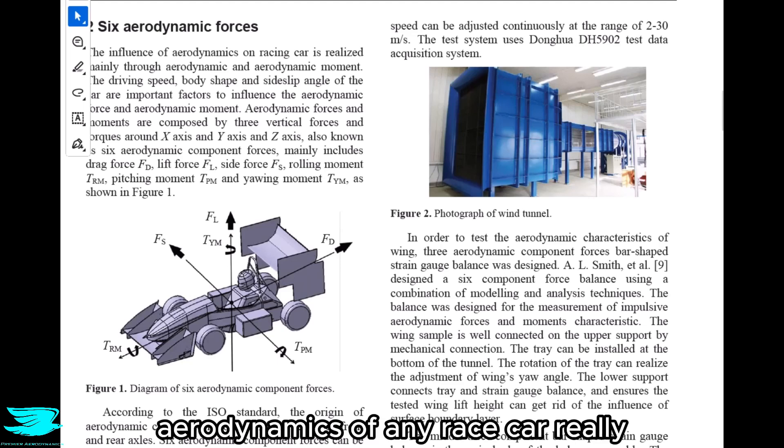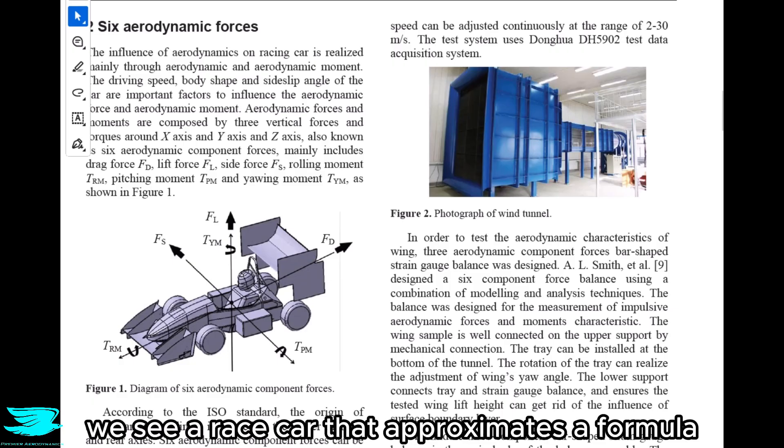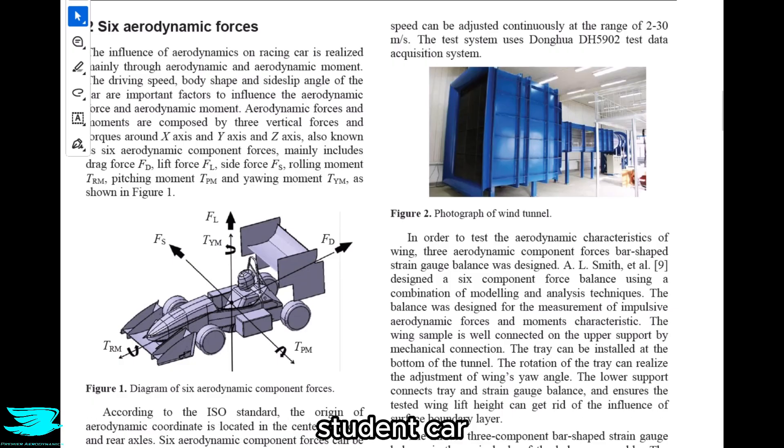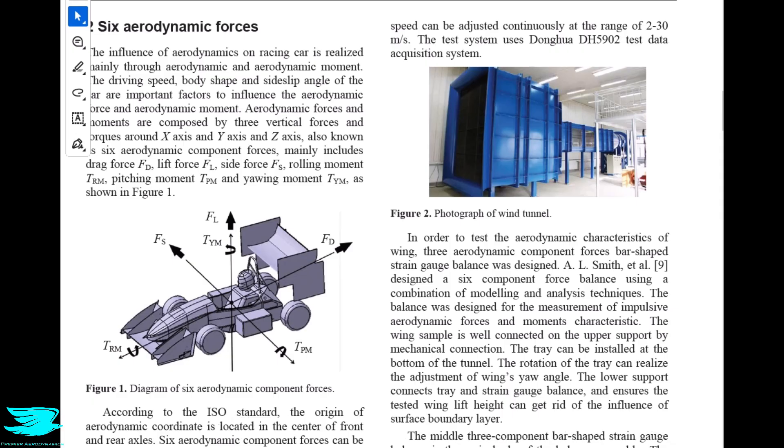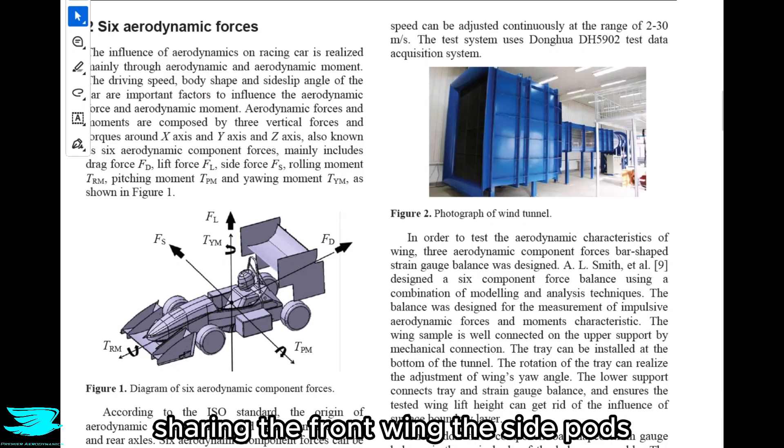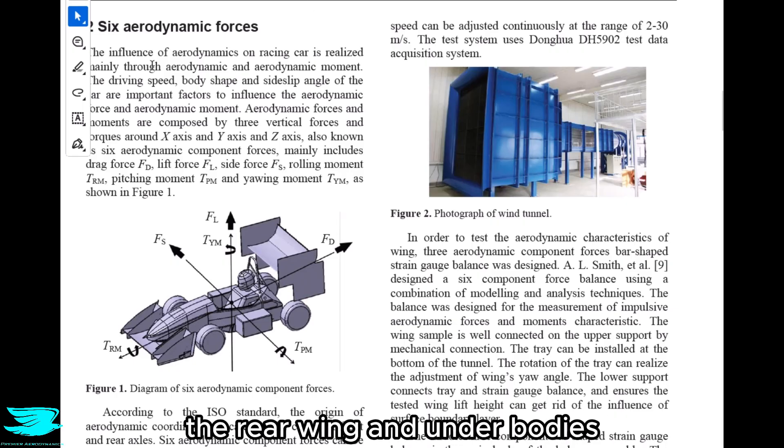The aerodynamics of any race car plays a vital role in its success. In Figure 1, we see a race car that approximates a Formula Student car. One major similarity is the very large rear wing, but most open wheel race cars approximate this geometry sharing the front wing, the side pods, the rear wing and underbodies.